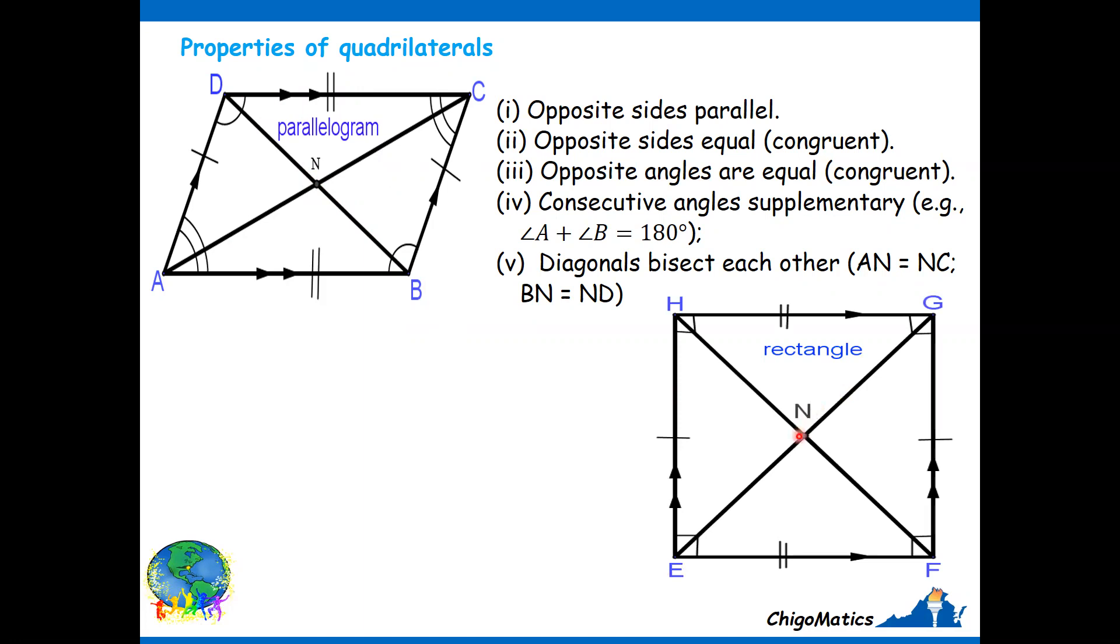A rectangle has four right angles, as indicated. Then diagonals are equal. The diagonals of the rectangle are equal. That is a very important property. Then all properties of the parallelogram that we have seen are found in a rectangle. Add to that these two: the diagonals and the angles.